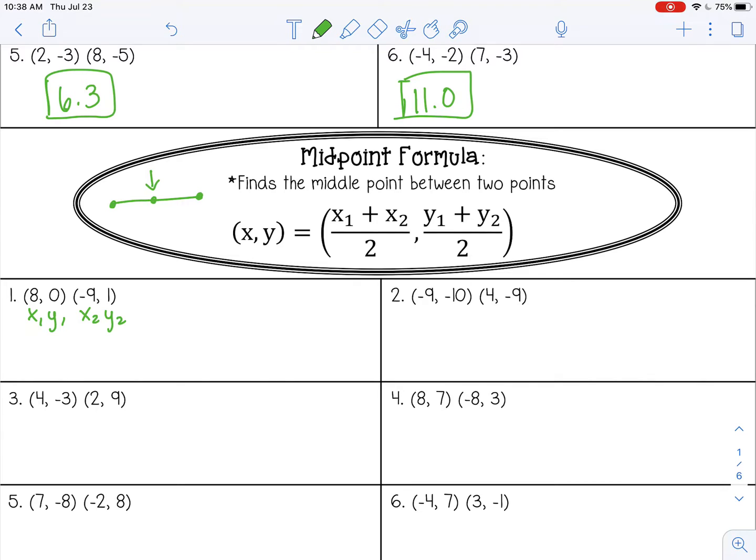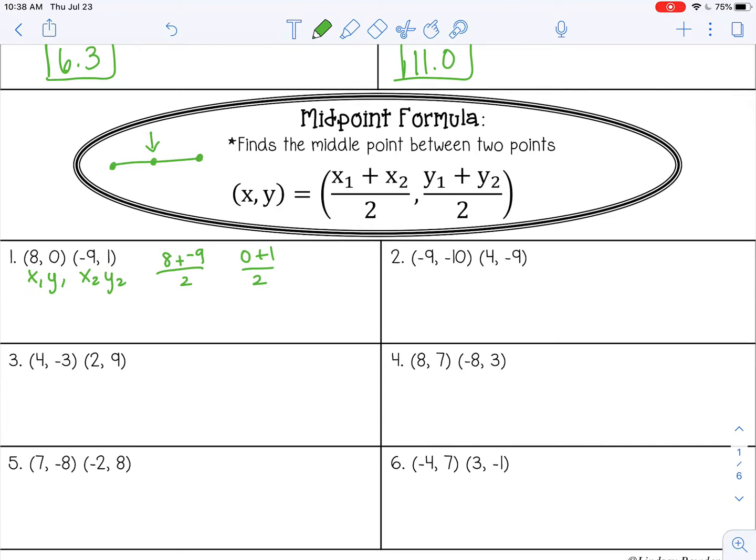So the formula says add x1 plus x2. And this is an ordered pair, so we have two parts. This part is going to give me my x coordinate. And then this part, y sub 1 plus y sub 2 over 2, will give me my y coordinate. And if you think about it, the midpoint is really just the middle or the average of the two points. So really, we're just finding the average of the x coordinates. I added the x coordinates together and divided by 2, and then the average of the y's. So add the y coordinates and divide by 2. So you don't necessarily need the formula for midpoint. You just need to remember to find the average.